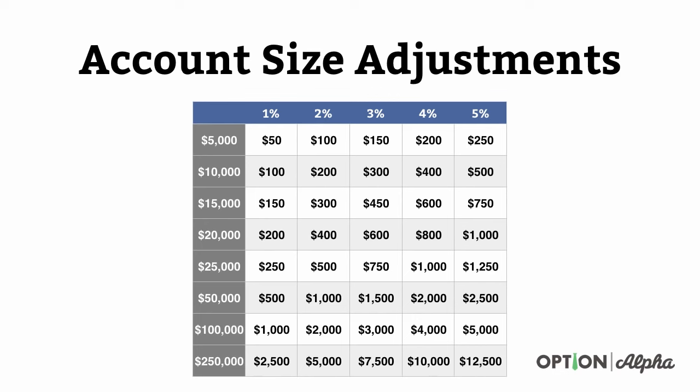The first thing is obviously account size adjustments. We have a really cool simple guide here on Option Alpha — it's 100% free, it's our account size and portfolio adjustment PDF — that basically runs through this entire process start to finish. What you want to focus on is that at Option Alpha we suggest an account size or trade size of 1 to 5% allocation per trade.